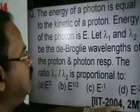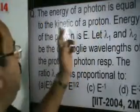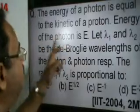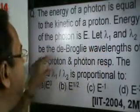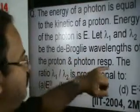This question has been asked in IIT 2004 for two marks. The energy of a photon is equal to kinetic energy of a proton. Energy of the photon is E. Let lambda 1 and lambda 2 be the de Broglie wavelengths of the proton and photon respectively.